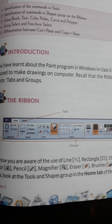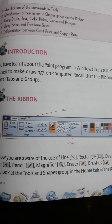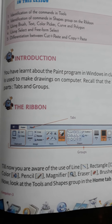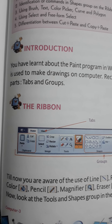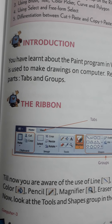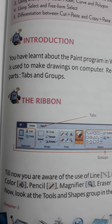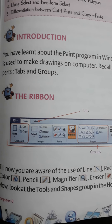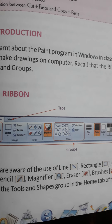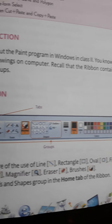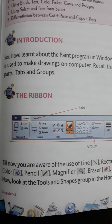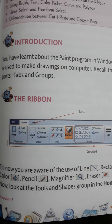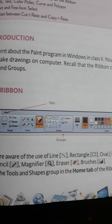This screen is called the ribbon. It is a part of the Paint program screen and has two parts: tabs and groups. Home and View are the two tabs, and in each tab there are many groups like Clipboard, Image, Tools, Shapes, and Colors — these are all groups within a tab.